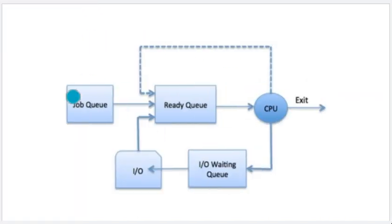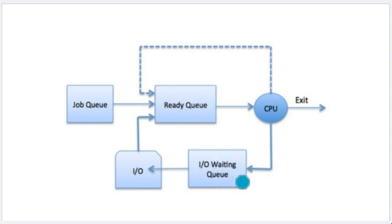This is our structure. In this particular structure, we are trying to manage queues and how the operations are performed. You can see here, there are 3-4 queues: Job Queue, Ready Queue, Input-Output Waiting Queue, or what we call the Device Queue. Now, what is the work of these queues? In the CPU, there is no direct execution without management.